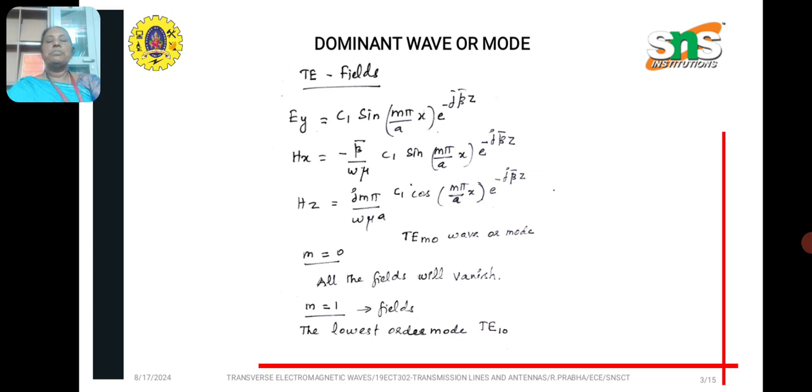And we know the TE wave fields, there are three fields, two magnetic fields HX, HZ and one electric field. So, the lowest possible value of TE wave is TE10.